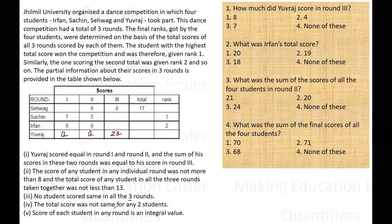The total score was not the same for any two students, and every student's score was an integral value. Now let us check the scores of the different students. For Sehwag it is very easy — since his total is 17 and he scored six and eight in the second and third rounds, he must have scored three in the first round.